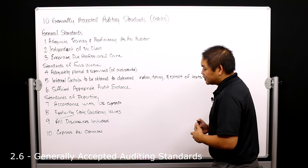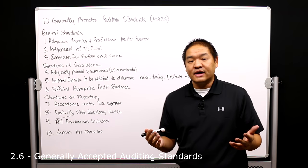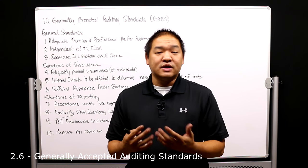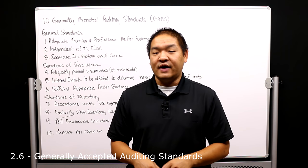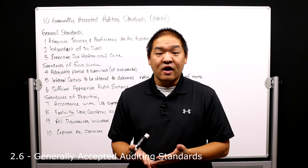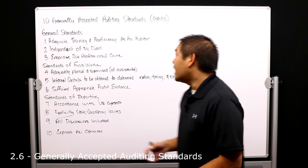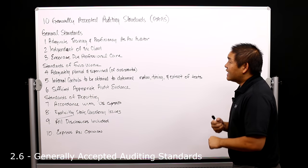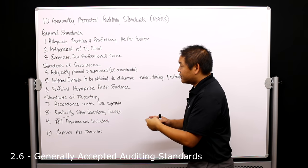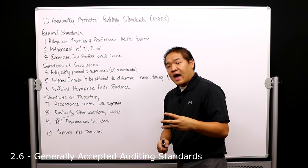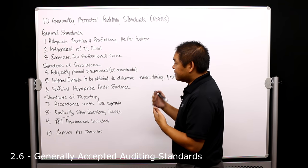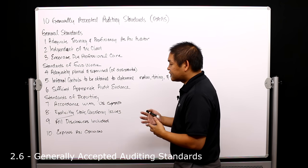The last standard is to express an opinion. Once we reach the end of our work, we express an opinion and include it in the financial statements so that users know we have audited the financial statements for material misstatements. So again, the 10 GAAS include three sections — General, Standards of Fieldwork, and Standards of Reporting — with the first three being general standards, the next three standards of fieldwork, and the last four standards of reporting.